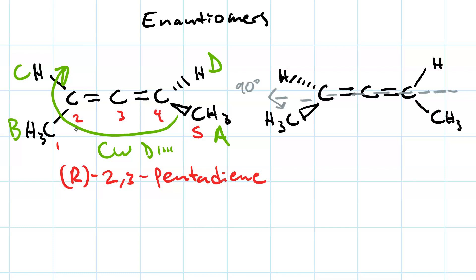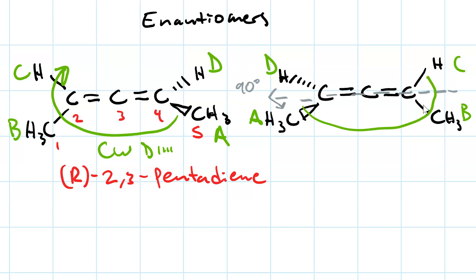That must mean the molecule on the right is S. Let's double check. We start here — this is priority A, the hydrogen is priority D. Highest and lowest priority, just because these are the ones on the 3D bonds. Then over here we've got B and C. If we go A, B, C, that's counterclockwise with the lowest priority group on a dash. That means the one on the right is S, 2,3-pentadiene.